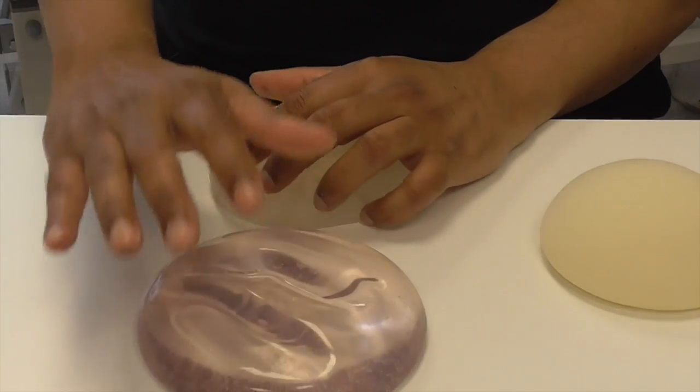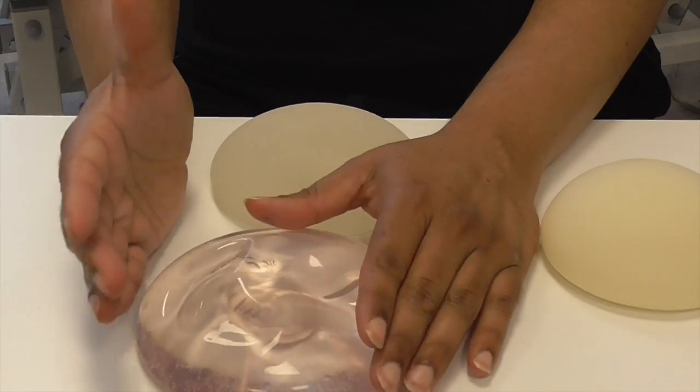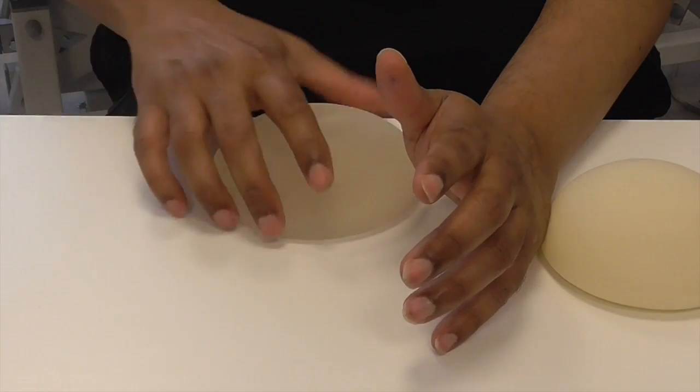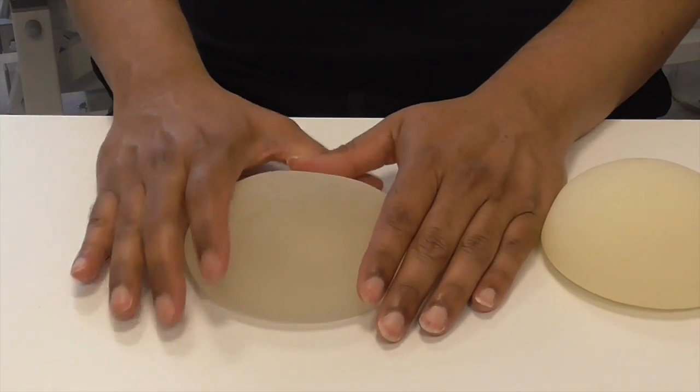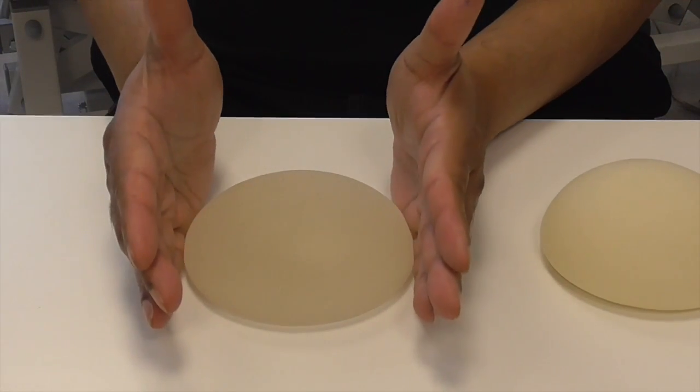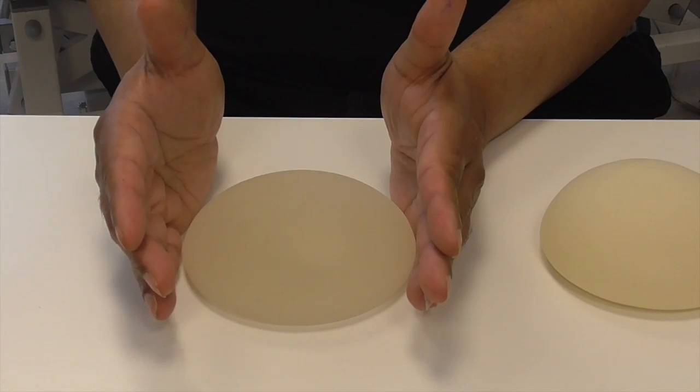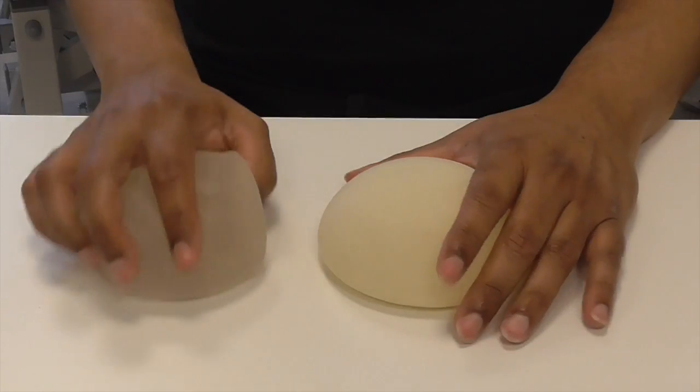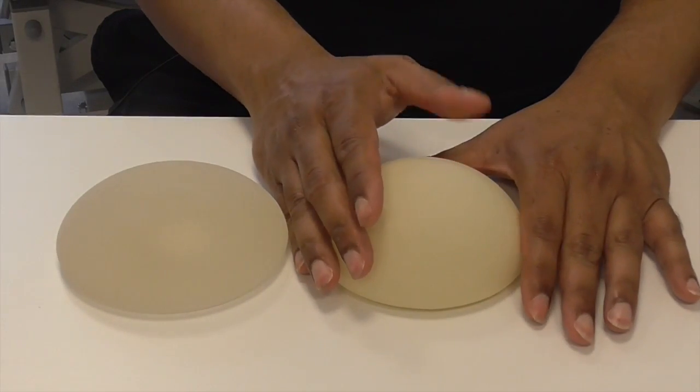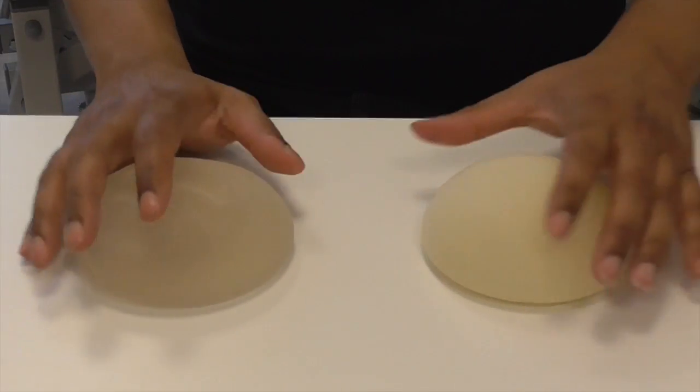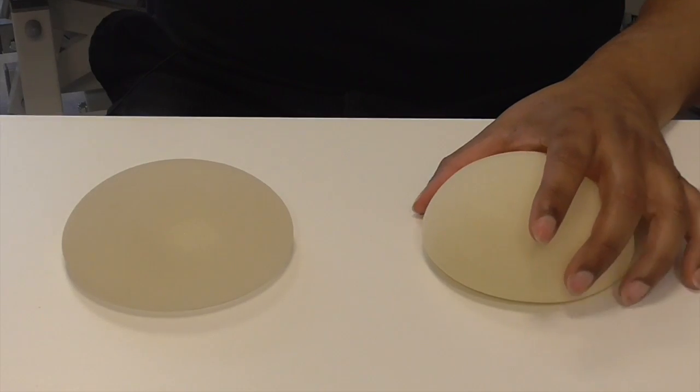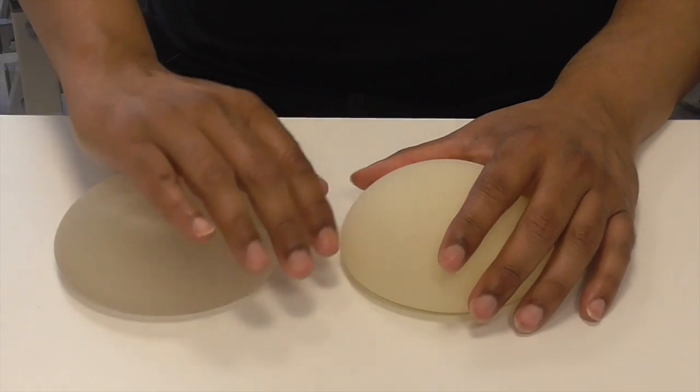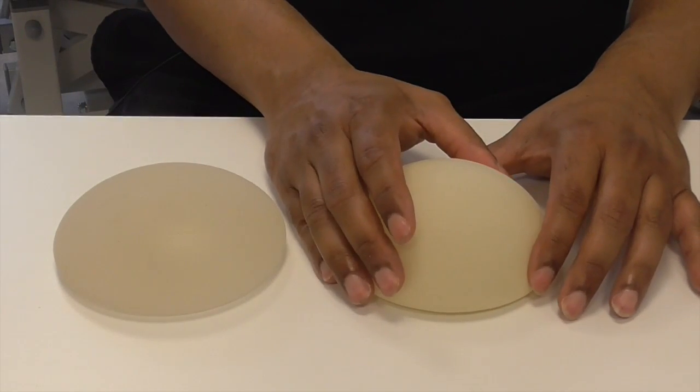With the smooth implant, the incidence of capsular contracture is in the vicinity of 40 percent, so we don't use those for cosmetic purposes in this country. With the texture, the risk has gone down to between 5 to 8 percent, and with the polyurethane possibly somewhat lower. So the vast majority of breast implants for cosmetic purposes are silicone with silicone gel with a texture or a polyurethane coating.